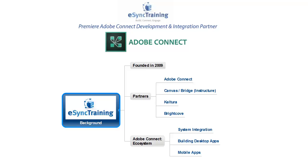We were founded in 2009. We're an Adobe Connect partner, and also a Canvas and Bridge strategic alliance partner, Kaltura, Brightcove. We focus on three key areas in the Adobe Connect ecosystem: integrating systems with Adobe Connect, which you're going to see here in just a few moments, building custom applications or pods for Adobe Connect to extend what's possible in the synchronous space, as well as making these apps available on mobile devices for Adobe Connect.